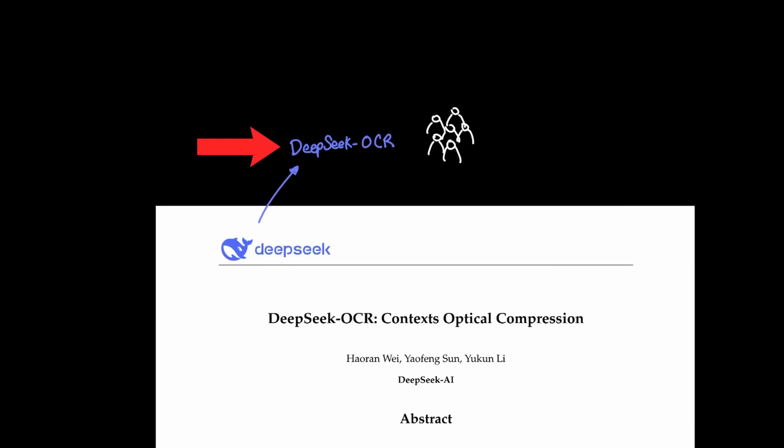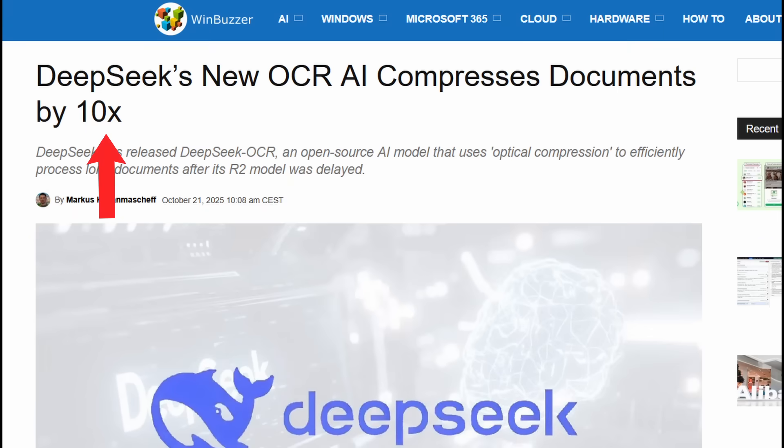There's been a lot of noise around the new DeepSeek OCR model, and this caused a lot of confusion because the biggest headline that seems to be circulating is that DeepSeek effectively compressed data 10 times smaller.